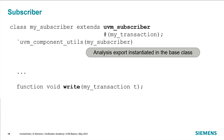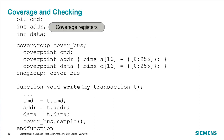The subscriber is extended from the UVM subscriber base class, parameterized by the transaction type, and registered with the factory. The UVM subscriber base type already includes an analysis export instantiated in the base class, so we don't have to rewrite that. The only thing we have to do for the subscriber is fill in the details of the write method, which is the function that gets called when the monitor calls analysisport.write. Inside the subscriber, we may have a set of coverage registers to hold information about the transaction.